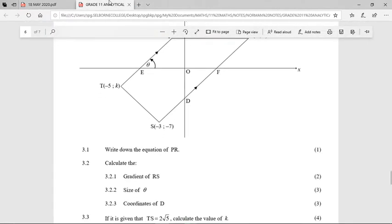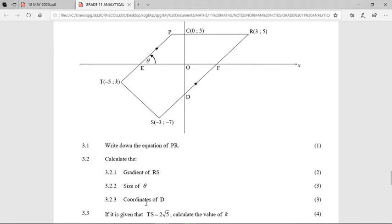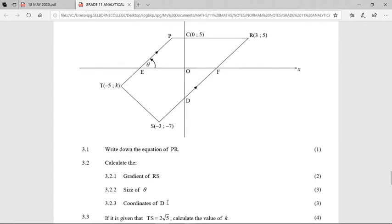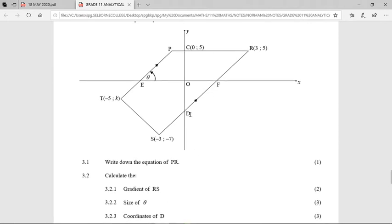3.2.3, work out the coordinates of D. If you look at D, D is the y-intercept of the line RS. So how do we usually find the y-intercept of a straight line? To find the y-intercept, we make x equal to 0. So let us first find the equation of the line RS. We do this by saying y equals mx plus c. Sub in the m, which we know to be 2. And now we can sub in one of the points, either R or S, but I'd probably choose R because there's no negatives there.